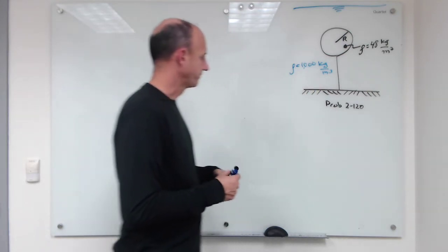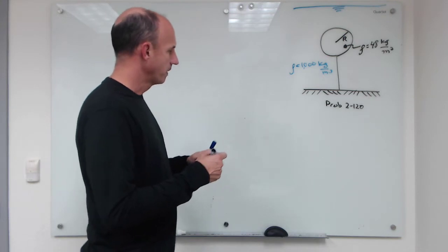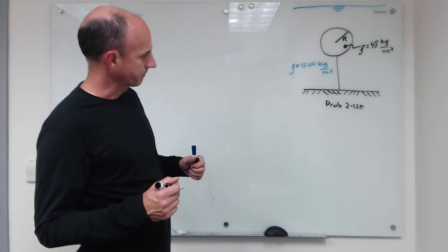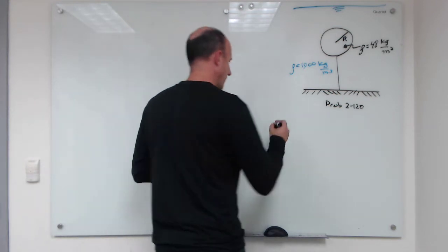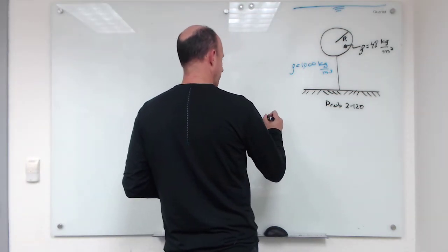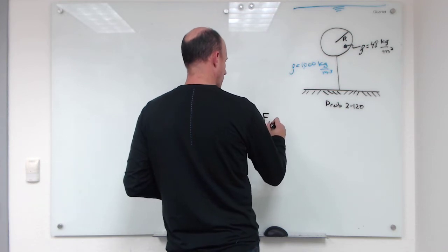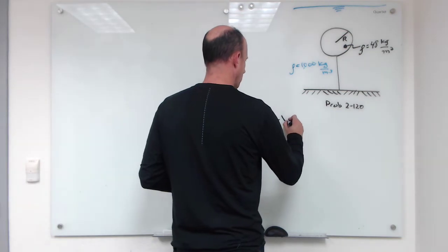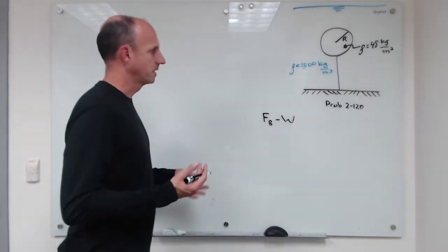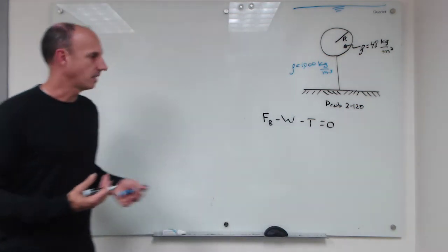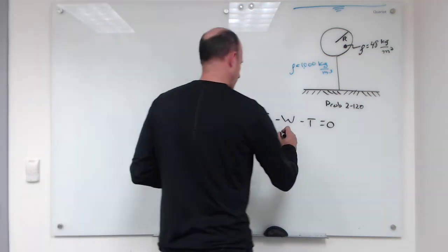Very quickly, if we did a free body diagram on the ball, you'd find that the buoyant force is positive upwards and pulling downwards is the weight of the ball and also pulling downwards is the tension in the cable. So those three things ought to equal zero.